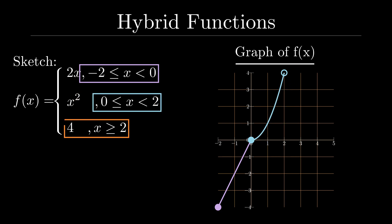And for our last function here, we've got y equals four, which is just a straight line for x being greater than or equal to two. So we use an arrow to indicate that it's going to go along forever, and we use a closed circle to indicate that it's starting at the point x equals two.